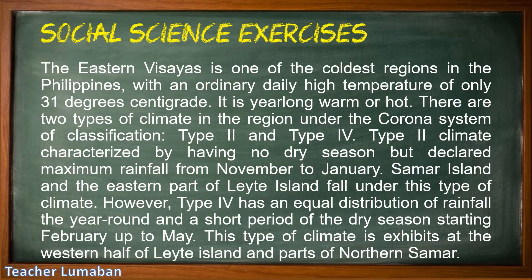Eastern Visayas is one of the coldest regions in the Philippines, with an ordinary daily high temperature of only 31 degrees centigrade. It is year-long warm or hot. There are two types of climate in the region under the Corona system of classification: Type 2 and Type 4. Type 2 climate is characterized by having no dry season but with maximum rainfall from November to January. Samar Island and the eastern part of Leyte Island fall under this type of climate.